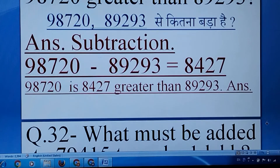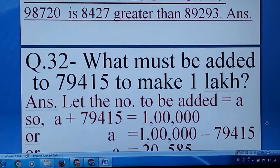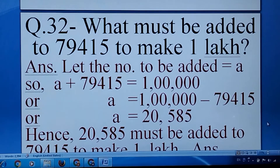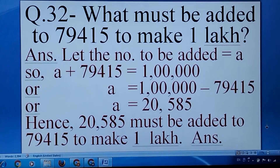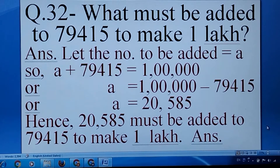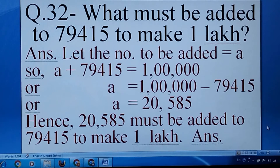What must be added? For example, what must be added to 5 to make it 10? The answer is 10 minus 5 equals 5. In the same manner, what must be added to 79,415 to make it 1 lakh? Let the number to be added be A. Then A plus 79,415 equals 1 lakh. So A equals 1,00,000 minus 79,415, which gives us 20,585.